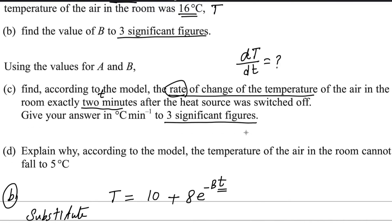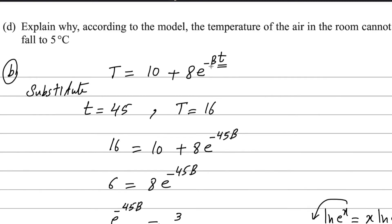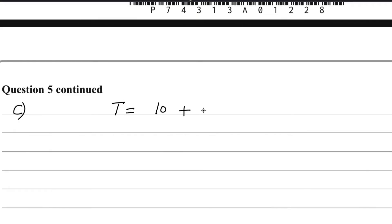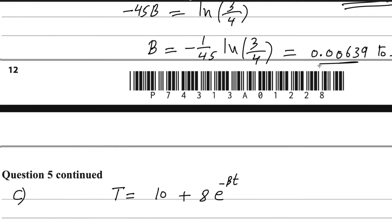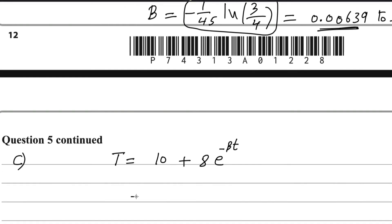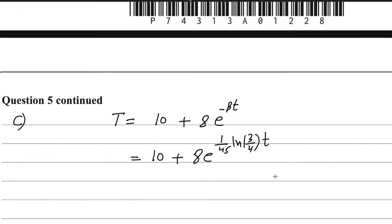Since we have the values of A and B, we substitute the exact value of B into the equation. The equation is T equals 10 plus 8 e to the power minus Bt. Instead of writing the rounded value of B, we substitute the exact value — which is minus 1 over 45 ln(3 over 4) — so the equation becomes T equals 10 plus 8 e to the power 1 over 45 ln(3 over 4) times t.